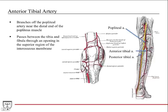The popliteal artery travels in the popliteal fossa on the posterior aspect of the knee. It comes down and bifurcates into the anterior tibial artery and the posterior tibial artery just below the popliteus muscle. The anterior tibial goes into the anterior compartment and the posterior tibial artery travels in the posterior compartment.